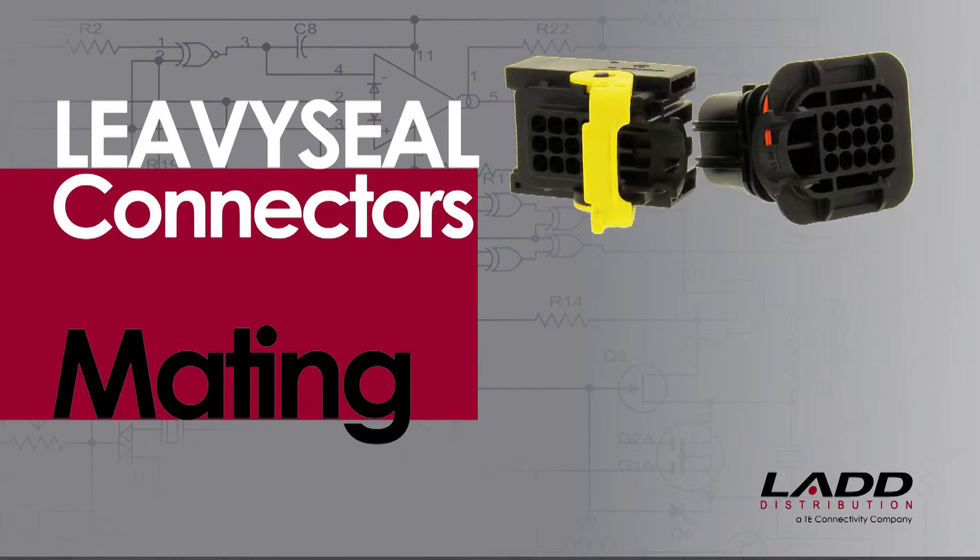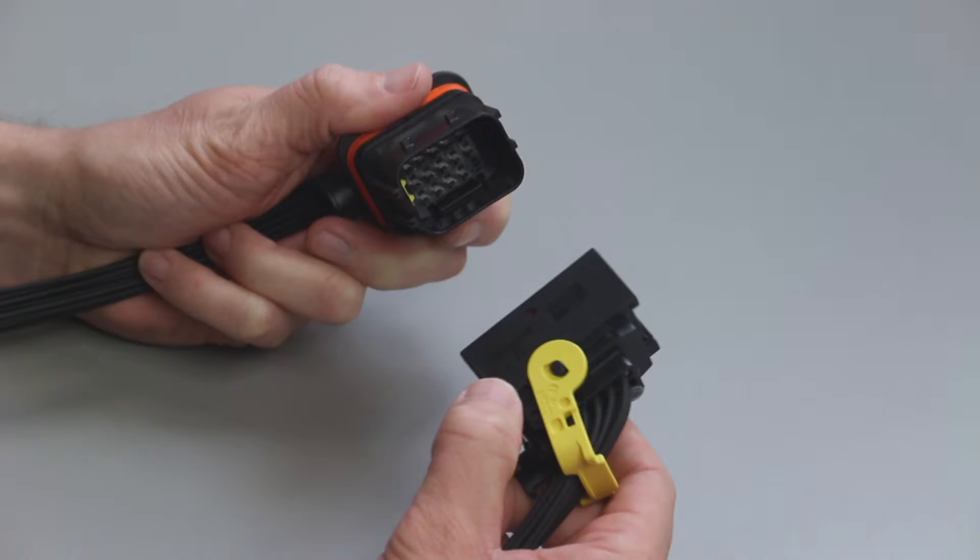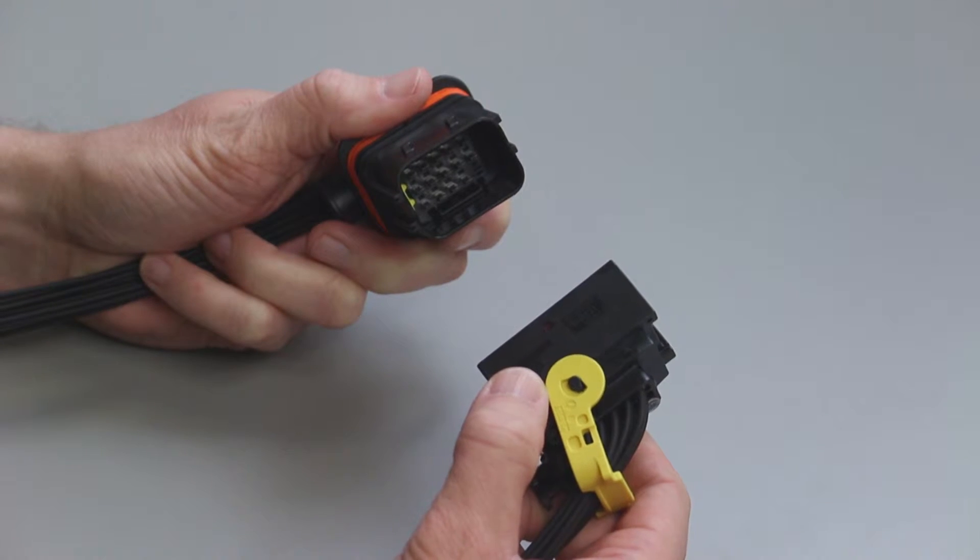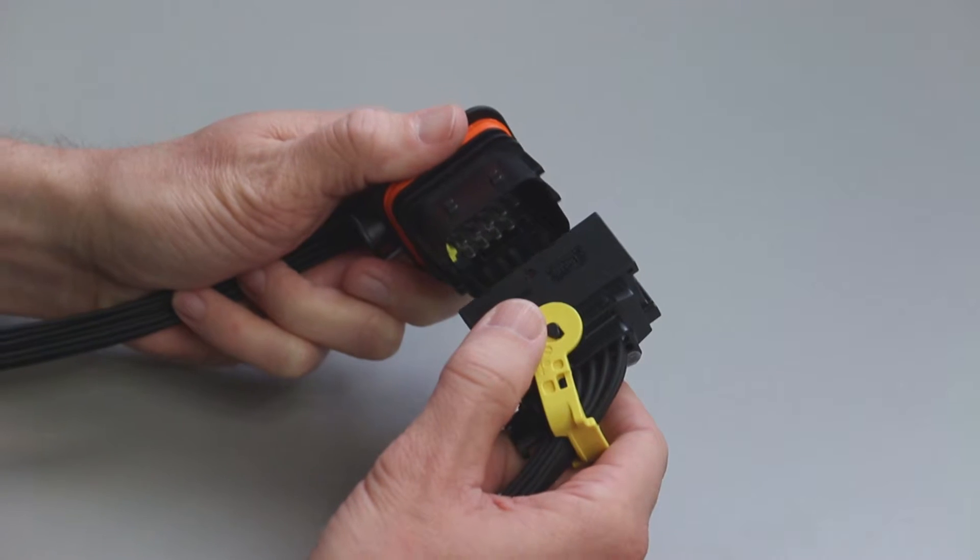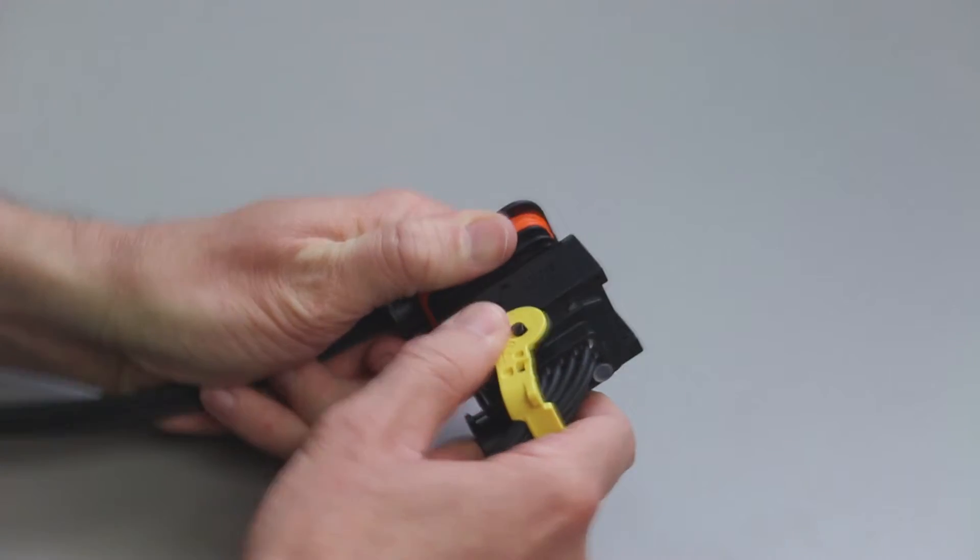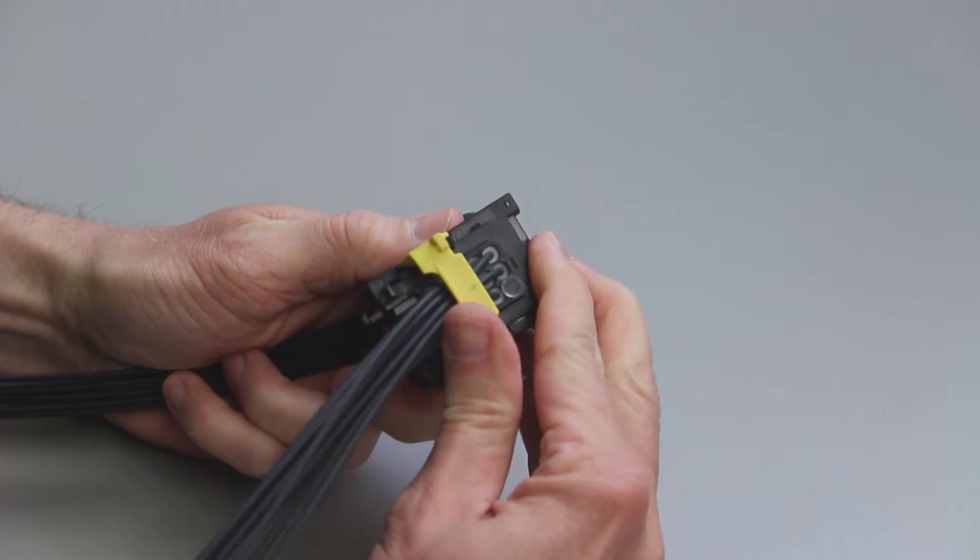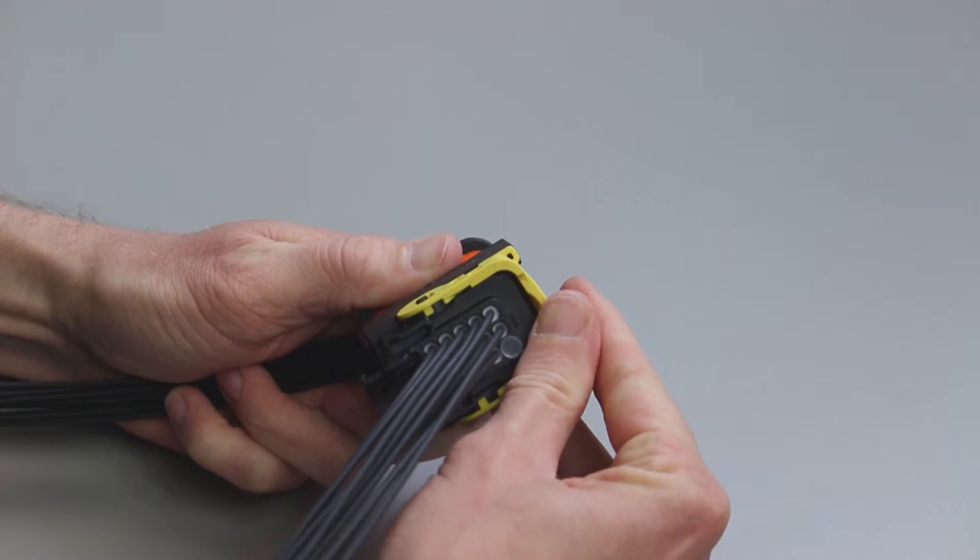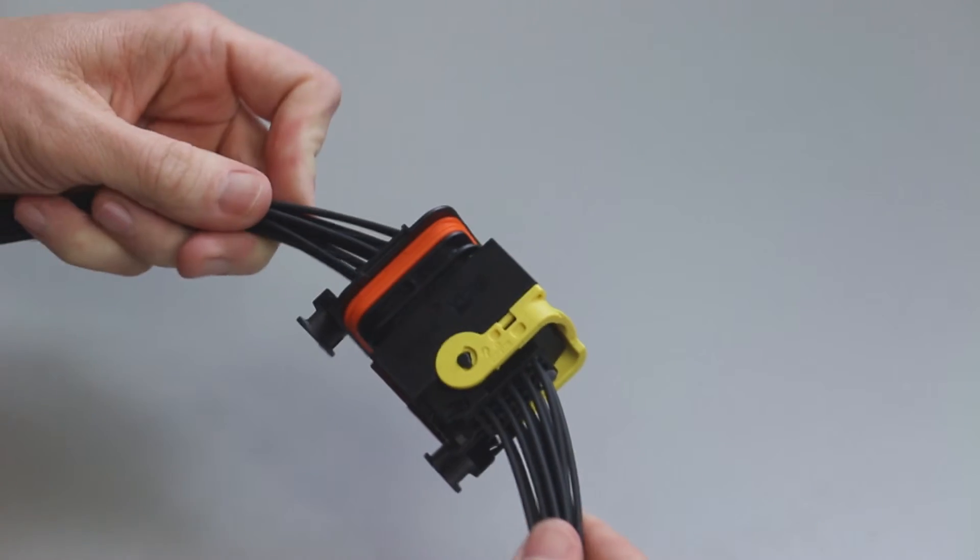Levee Seal Connector Mating. All Levee Seal Connectors are designed to be mated and unmated by hand. Align the receptacle contact housing with the tab housing. Push the two parts together and pull the lever lock on the receptacle contact housing until you hear and feel a click.